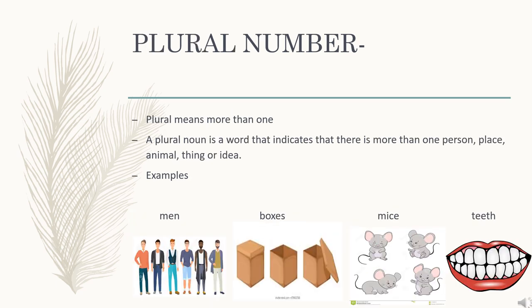Number 2, plural number. Plural means more than one. A plural noun is a word that indicates that there is more than one person, place, animal, thing or idea. Examples: men, boxes, mice, teeth.